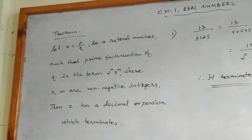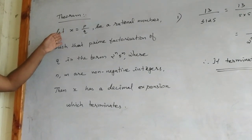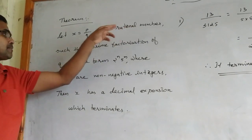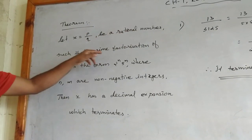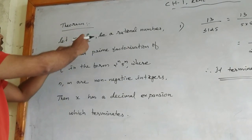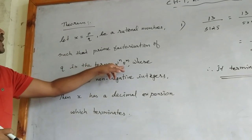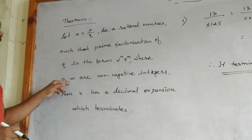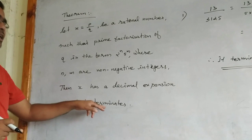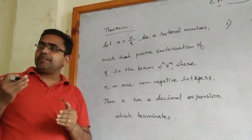Next theorem: if X = P/Q is a rational number such that the prime factorization of the denominator Q is in the form 2ᴺ × 5ᴹ, where N and M are non-negative integers, then X has a decimal expansion which terminates. This theorem is used to check — without actually performing long division — whether the fraction is terminating or non-terminating.